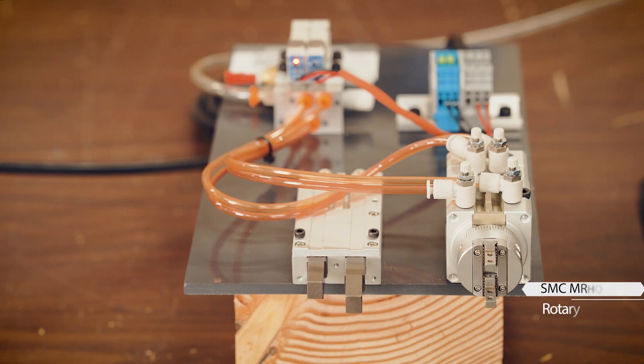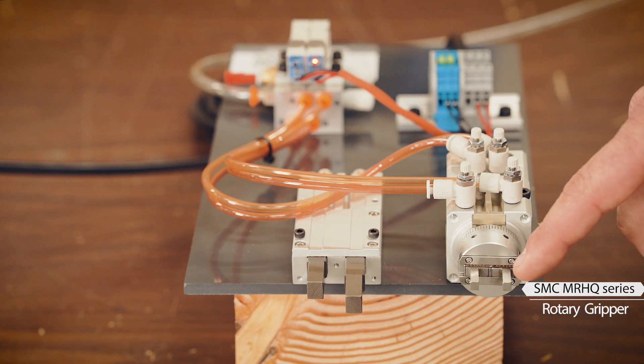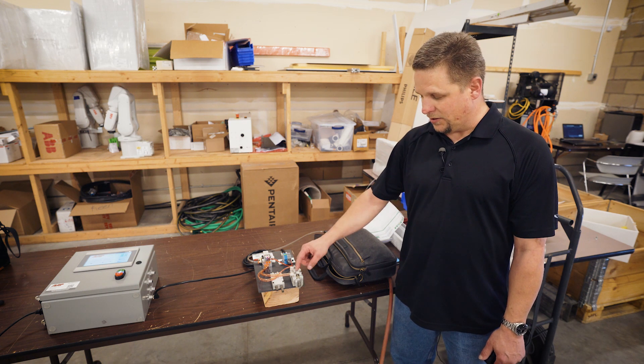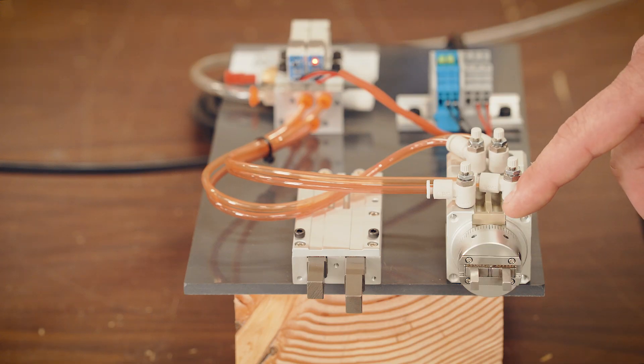This is the SMC MR-HQ Series Rotary Gripper. This actuator is able to do two accesses with two valve control.